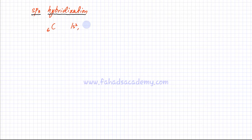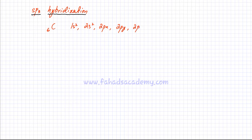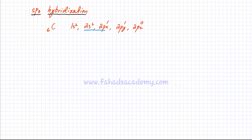The 2s orbital has a total of two electrons, then the 2Px, 2Py, and 2Pz orbitals. 2Px has one electron, 2Py has one electron, and 2Pz has zero electrons. This is the electronic configuration of carbon in its ground state and this is the outer shell electronic configuration. So in the outer shell, which is going to be involved in bonding, it has a total of four electrons.